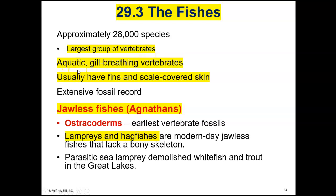They usually have fins and scales. We're going to start with the jawless fishes, or agnathans. Using the word gnathostome and putting an 'a' in front of it means 'without jaws.' Agnathans are the jawless fishes, and they include the lampreys and the hagfishes. They don't have a bony skeleton.